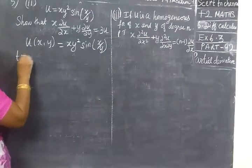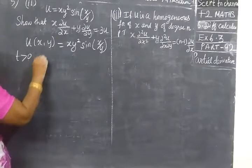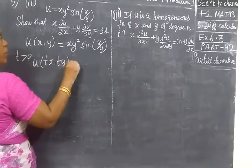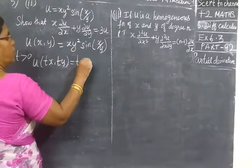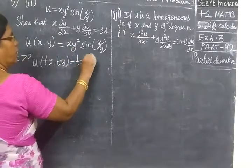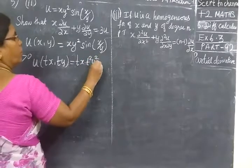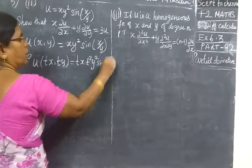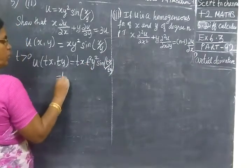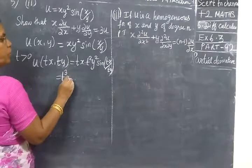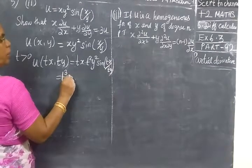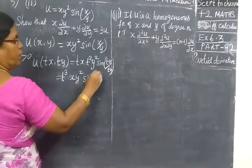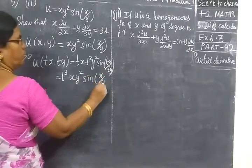Now for t greater than 0, we take u of tx, ty. For x we are writing tx, then for y, t square y square, then sin of tx, ty. Then t u, t2, then x, y square, then sin of t cancel, xy y.